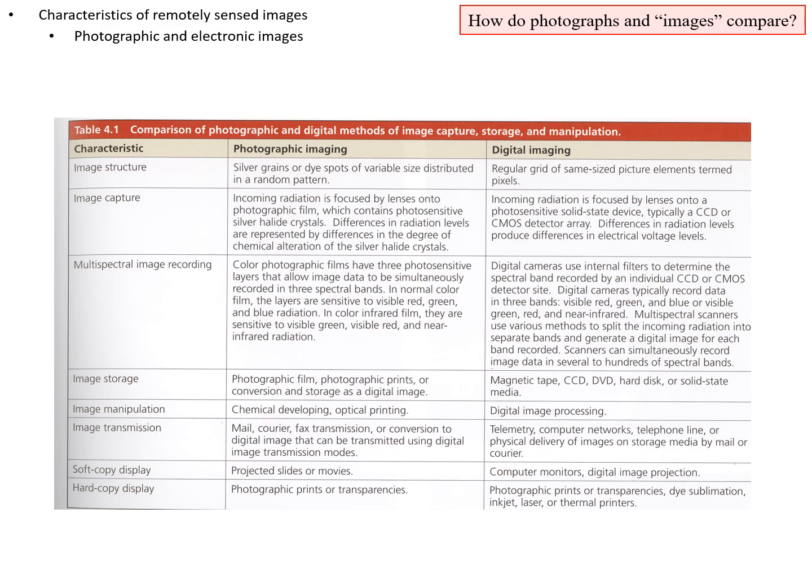For image capture, incoming radiation is focused by a lens onto photographic film. Differences in radiation levels are represented by differences in the degree of chemical alteration of the silver halide crystals on the film. For digital imaging, incoming radiation is focused onto a photosensitive solid-state device — typically a charge-coupled device or a CMOS detector array. The more radiation that comes in, the larger the electrical charge that's generated, and the generated electrical charges for all the pixels in a sensor are recorded.